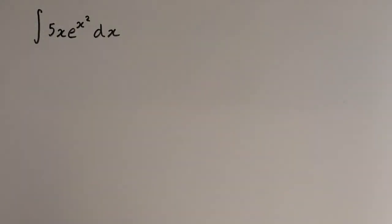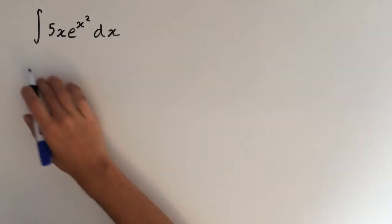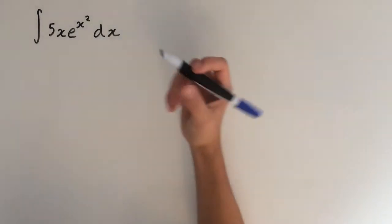Hey guys, in this video I'm going to show how to find the integral of 5x times e to the x squared. So at first this looks like quite a tricky integral, but if we use substitution this becomes a lot easier.